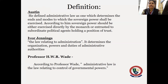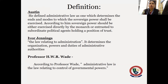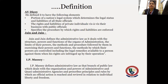Let us check various definitions given by legal scholars. Austin has defined administrative law as one which determines the ends and the modes to which the sovereign power shall be exercised. According to him, sovereign power should be either exercised directly by the monarch or entrusted to subordinate practical agents holding a position of trust. Another eminent jurist, Ivor Jennings, defined administrative law as the law relating to administration — it determines the organization, powers, and duties of administrative authorities.